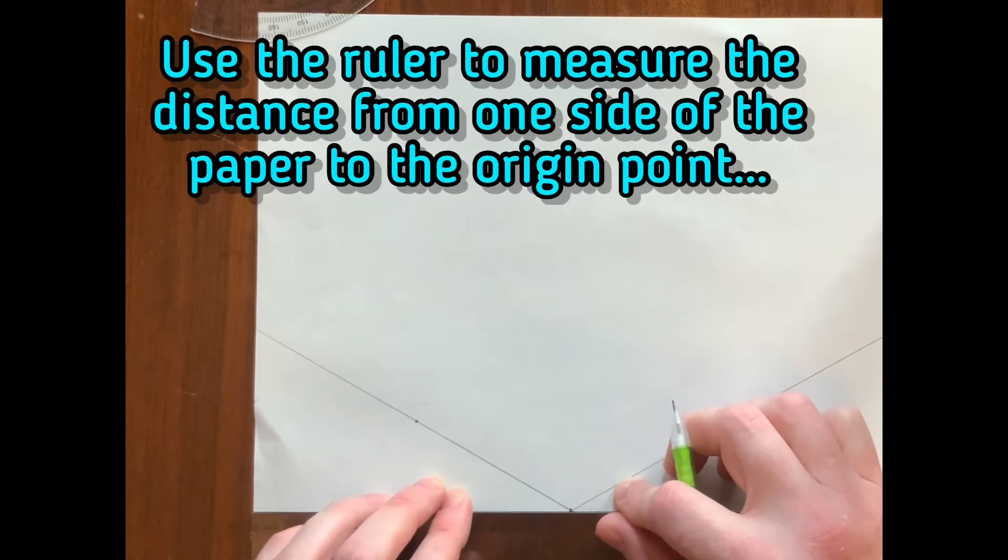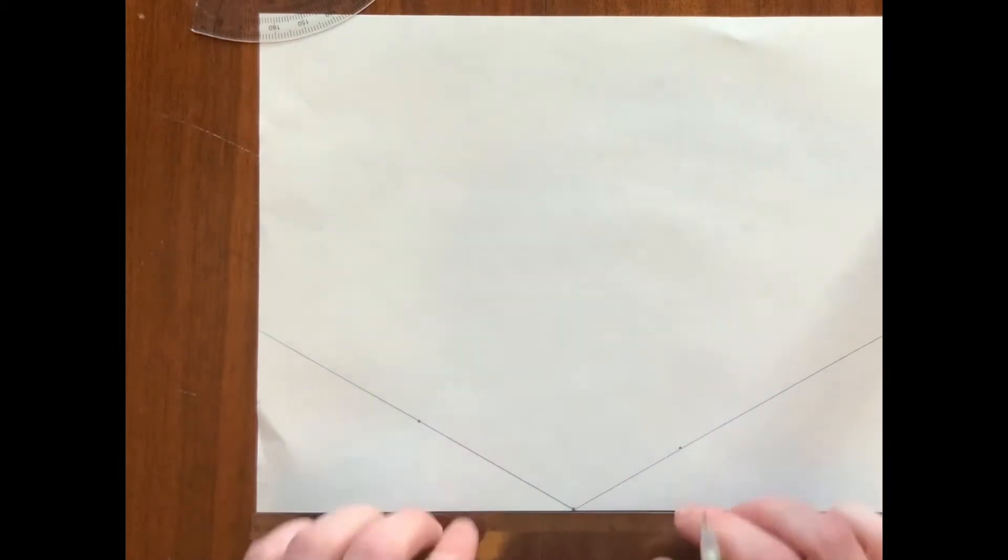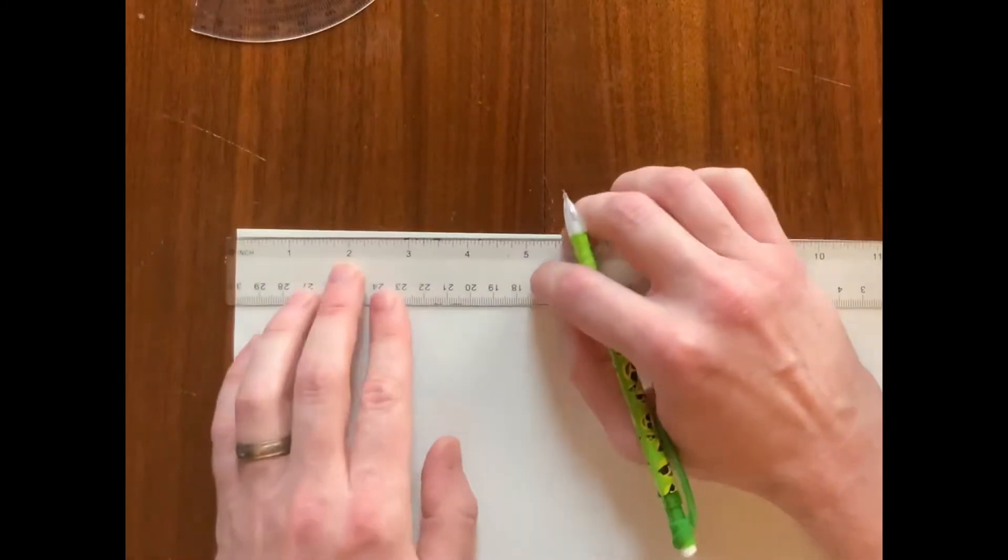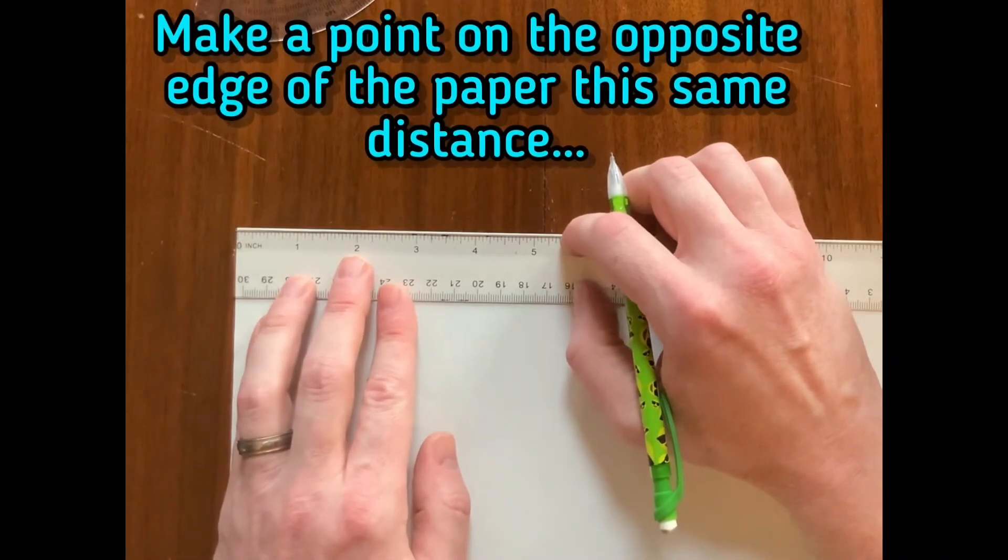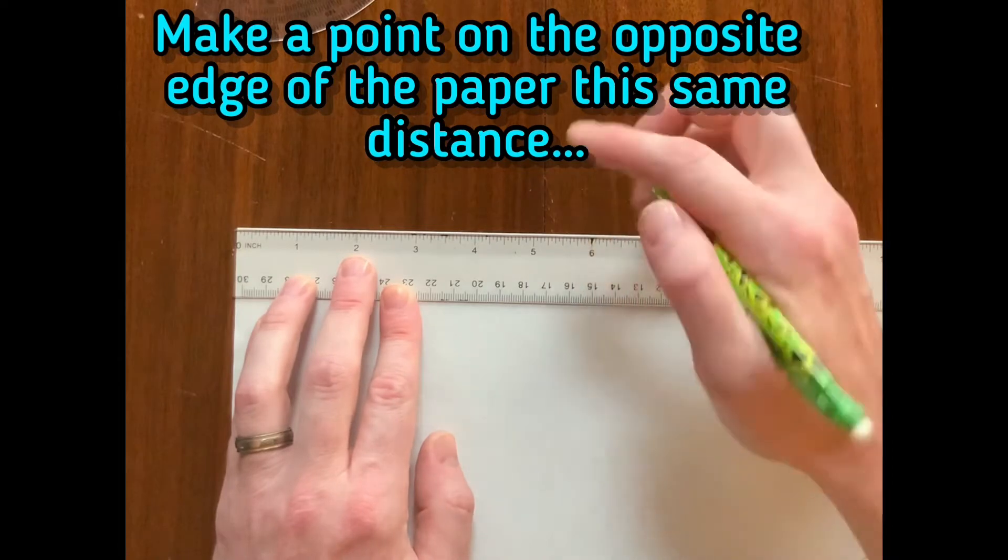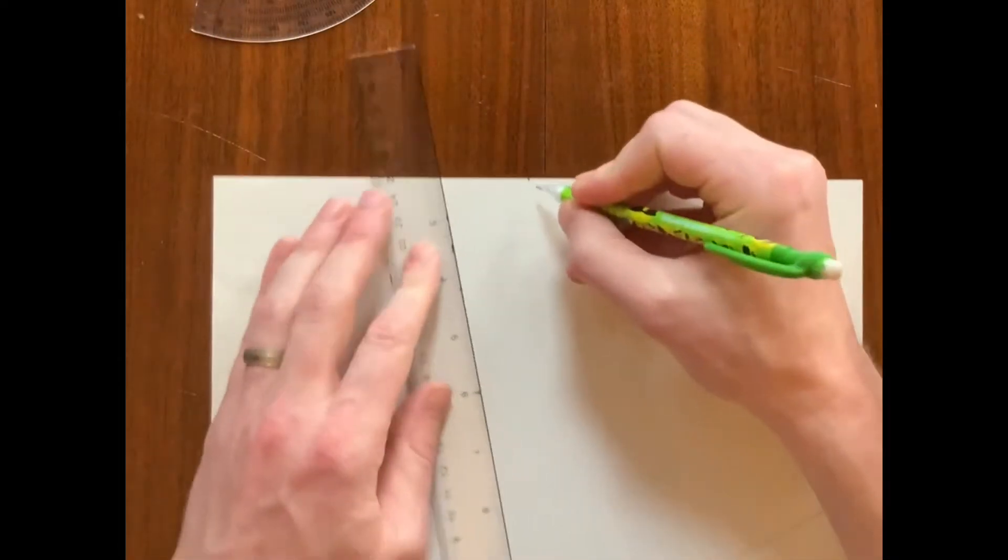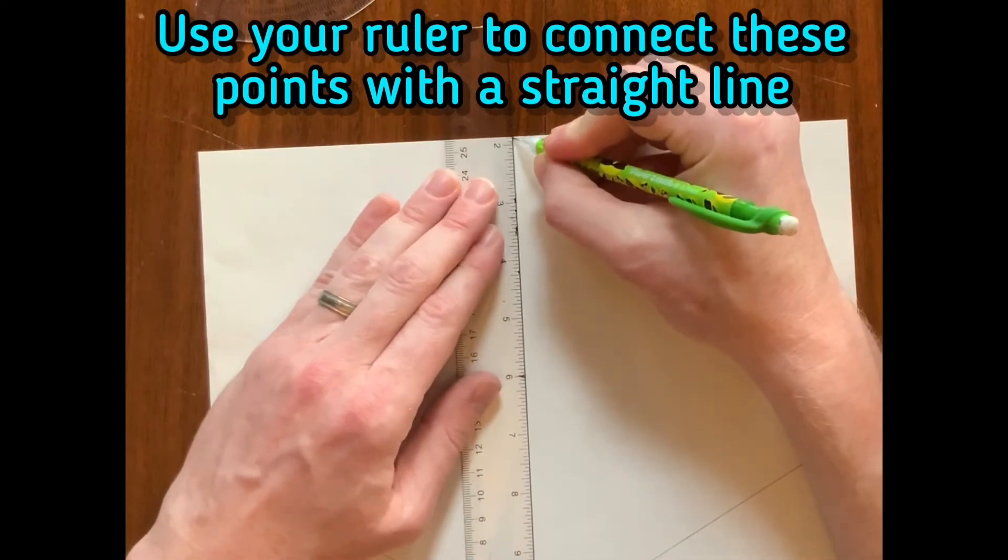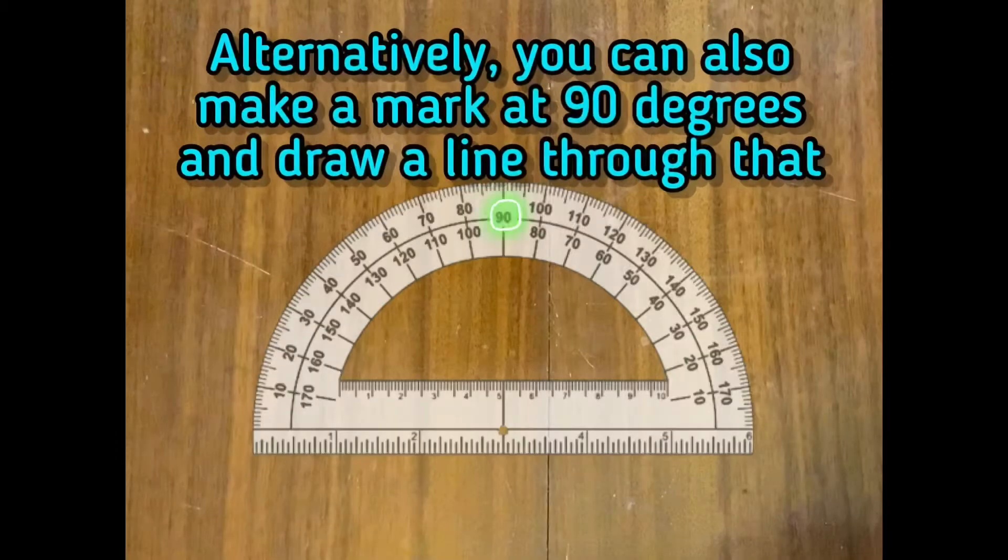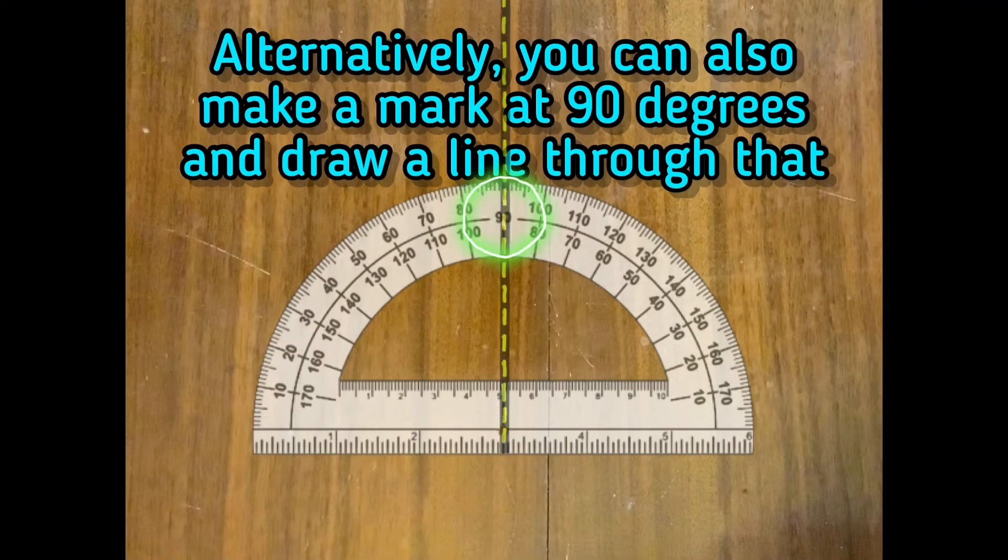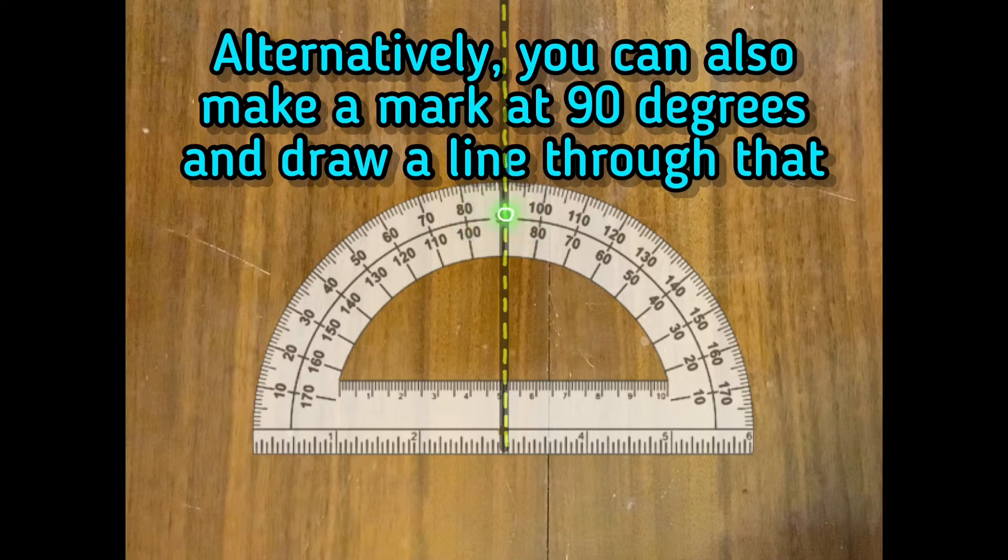Use the ruler to measure the distance from one side of the paper to the origin point. Make a point on the opposite edge of the paper that's this same distance. Use your ruler to connect these points with a straight line. Alternatively, you can also make a mark at 90 degrees and draw the line through that.